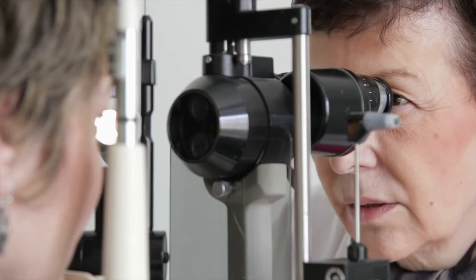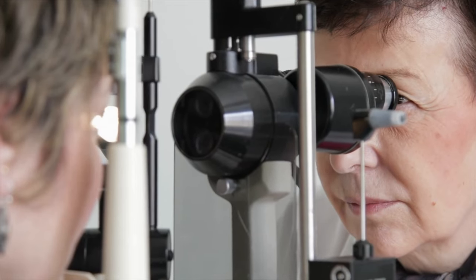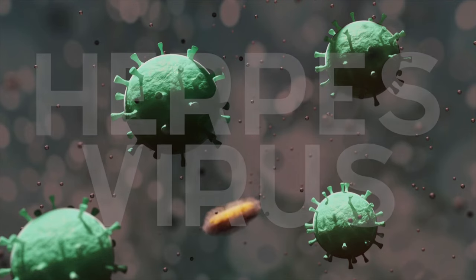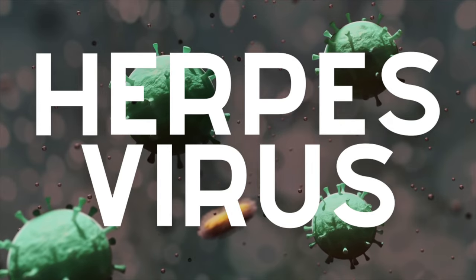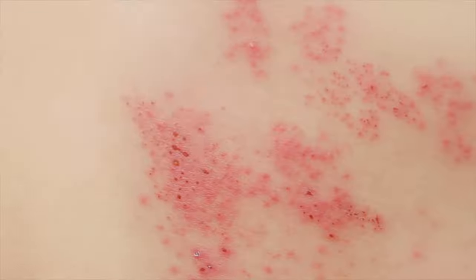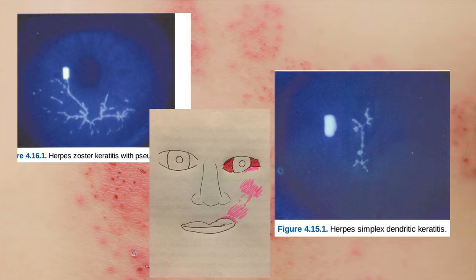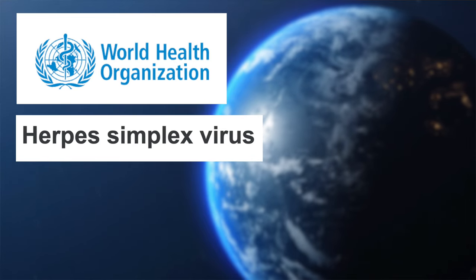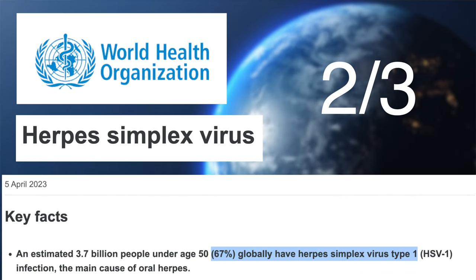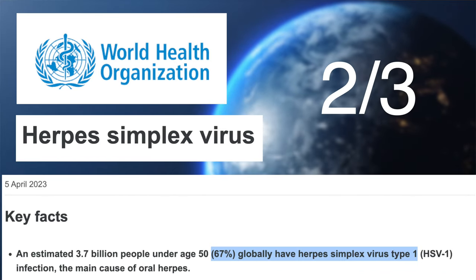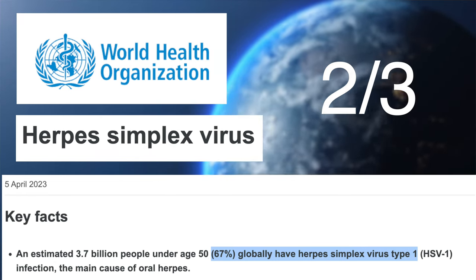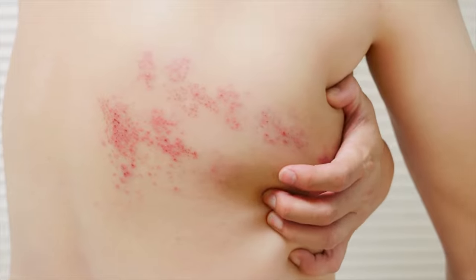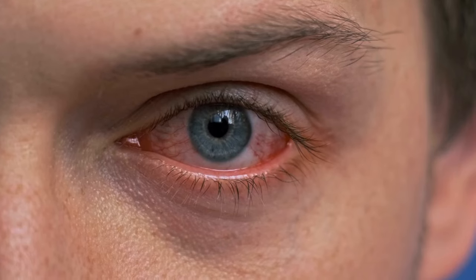In an eye clinic, you can be presented with many interesting cases, but one topic in particular that is often overlooked and misunderstood is the herpes virus. How common is it and how bad can it get? The WHO estimates that globally, two in three people under the age of 50 are already infected with herpes. But why is it that no one really talks about it? And what happens to our eyes when we become infected?